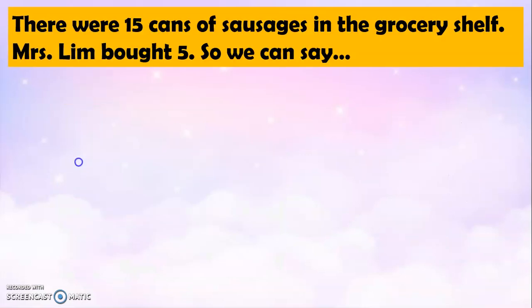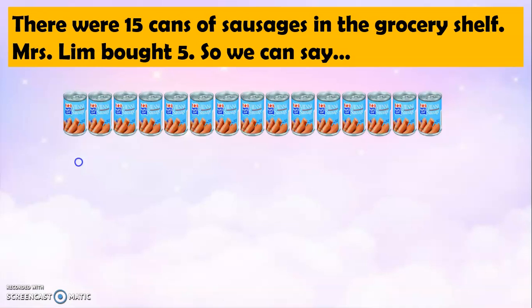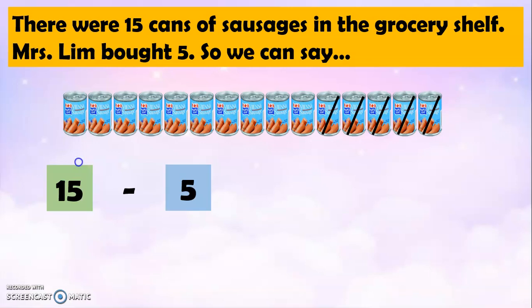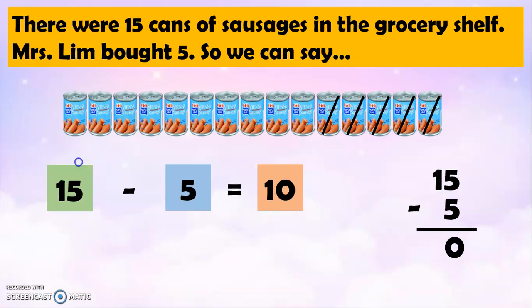So, again, there were 15 cans of sausages in the grocery shelf. Mrs. Lim bought 5. So, we can say 15 minus 1, 2, 3, 4, 5 equals — very good — 10. So, 15 minus 5 equals 10. There you go.